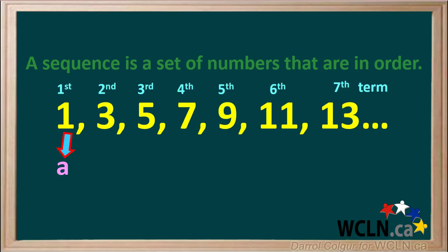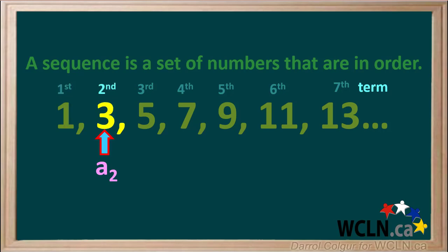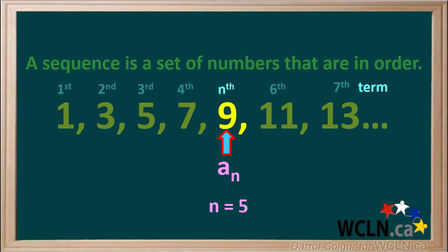Terms in a sequence are usually symbolized by a lowercase a. The first term is called a1. We can say that in this particular sequence, term a1 is equal to the number 1. The second term is called a2, so a2 is equal to the number 3. The third term is called a3, so a3 is equal to the number 5. We can represent a general term by the letter n.